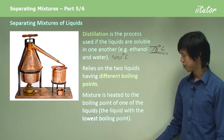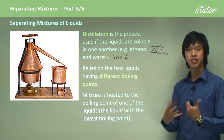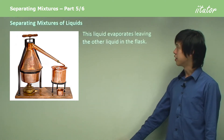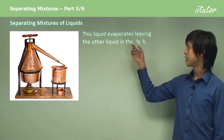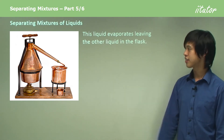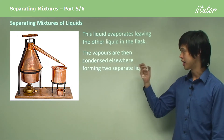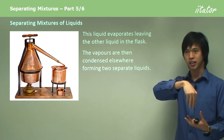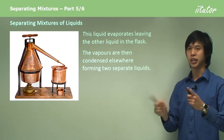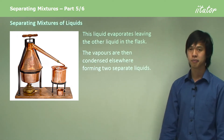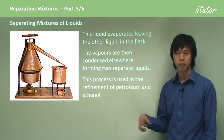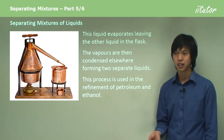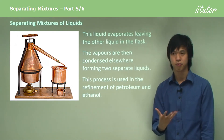The water remains liquid because it hasn't reached its boiling point yet. The lower of the two boiling points - that liquid evaporates, leaving the other liquid in the flask. You can then condense the vapors to form two separate liquids. If you trap the gases and condense them, you get two almost pure liquids. This process is used in the refinement of petroleum and also the refinement of ethanol from fermentation.